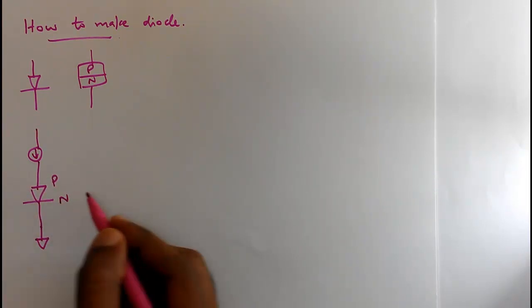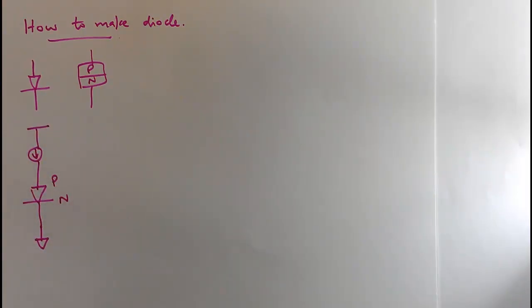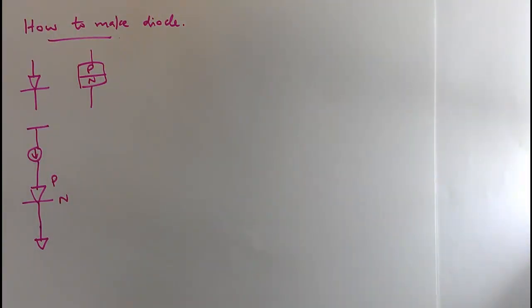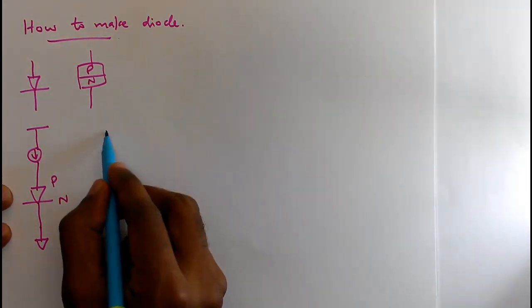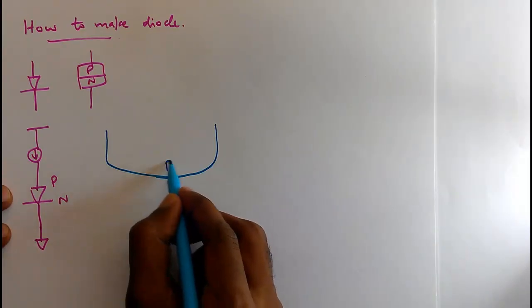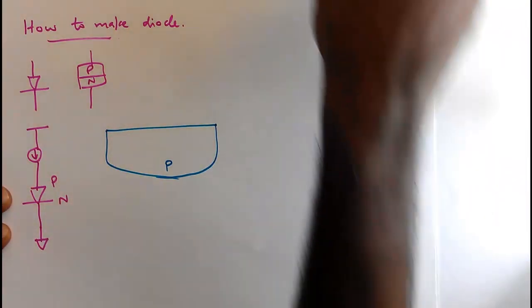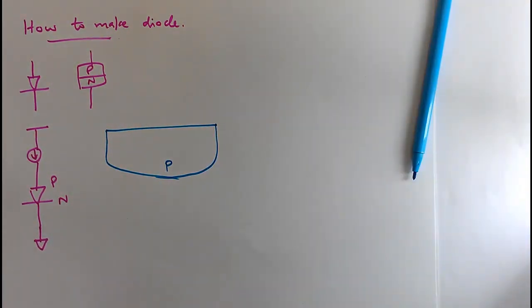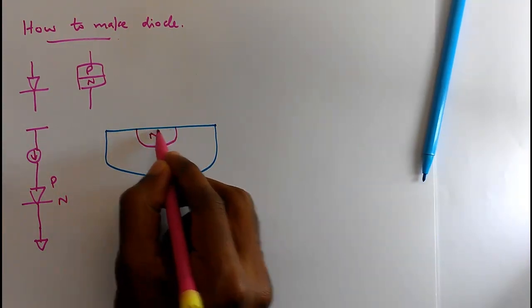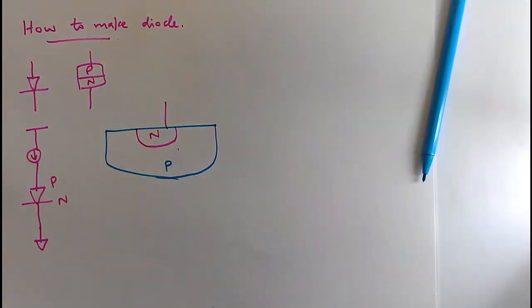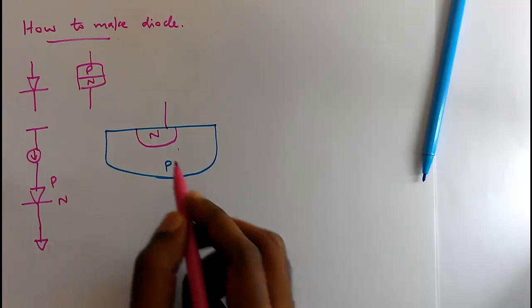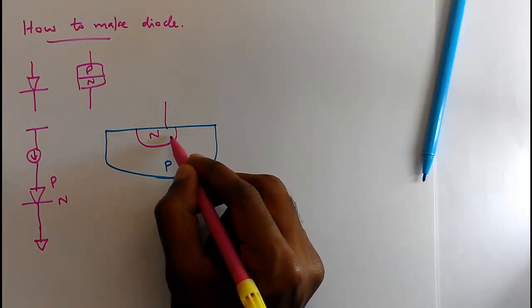This is the P terminal and this is the N terminal. Now let's discuss how we will manufacture this in standard CMOS process. In standard CMOS process, we have a P substrate. Every device is made on this P substrate, and if we make an N+ implant, then we get a PN junction. So this is a simple diode in the CMOS process — you have a diode formed like this.